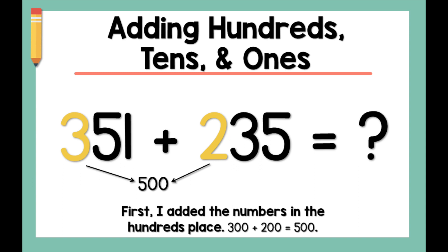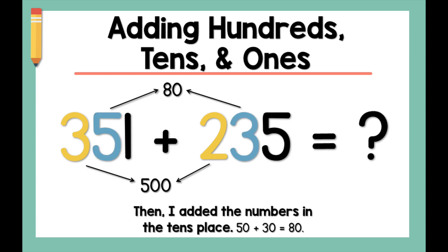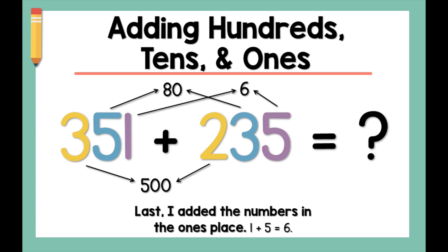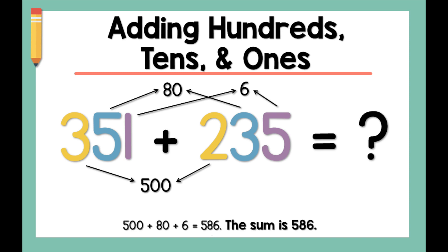300 plus 200 equals 500. Then I added the numbers in the tens place: 50 plus 30 equals 80. Last, I added the numbers in the ones place: 1 plus 5 equals 6. 500 plus 80 plus 6 equals 586.